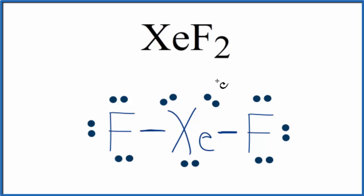So the first thing to notice is that the xenon in the center here has 2, 4, 6, 8, 10 valence electrons, more electrons than an octet. That's okay, xenon can have an expanded octet.